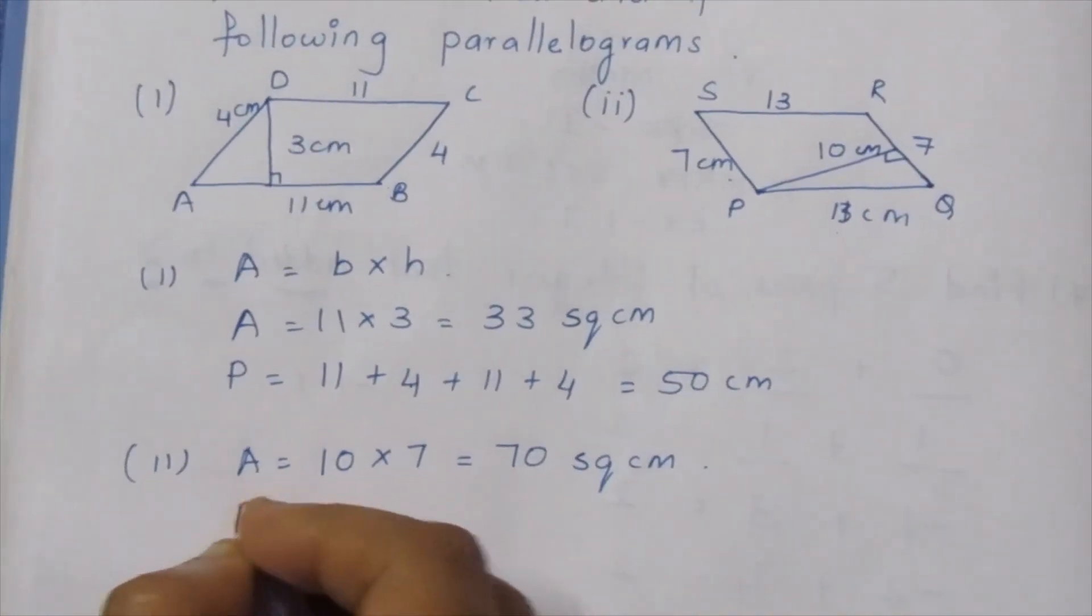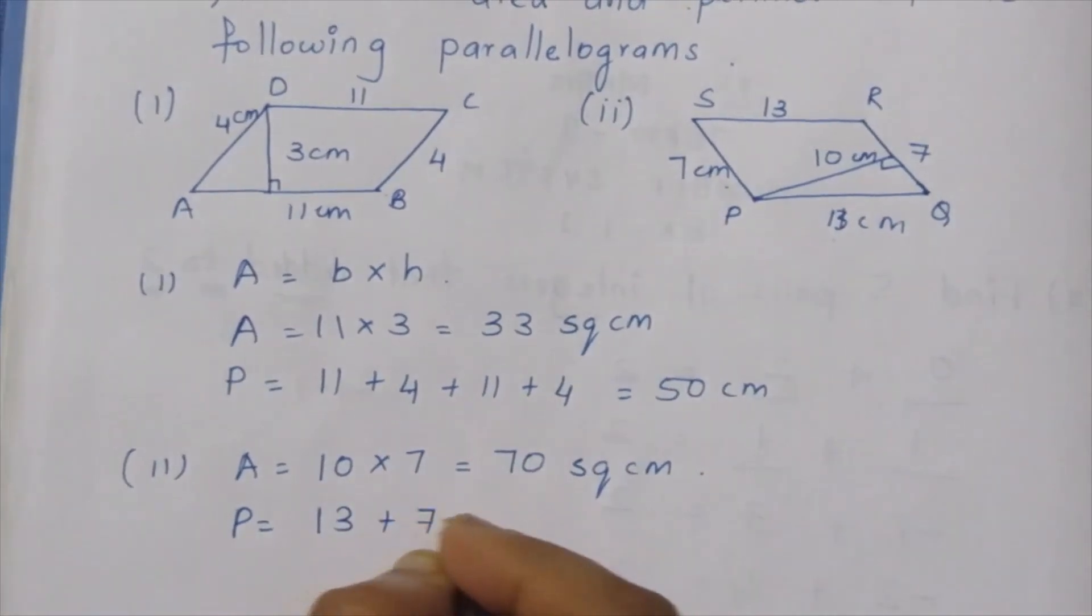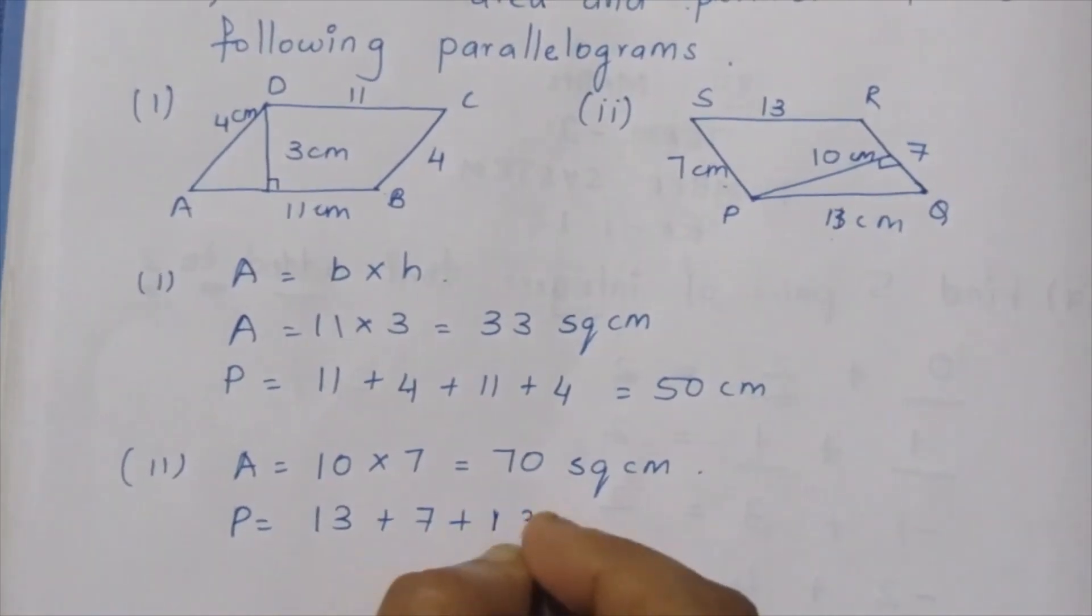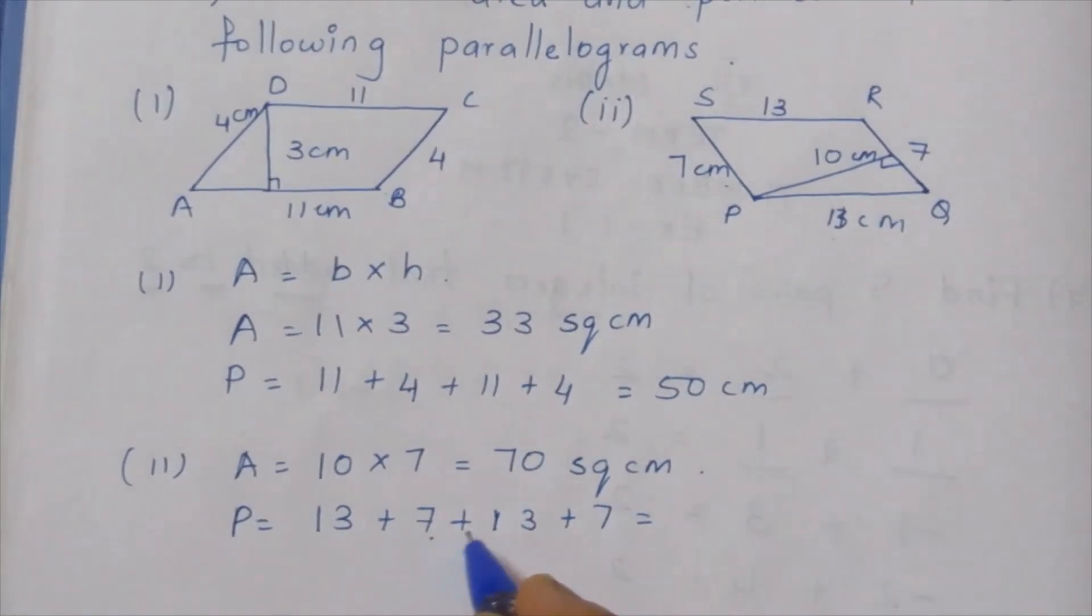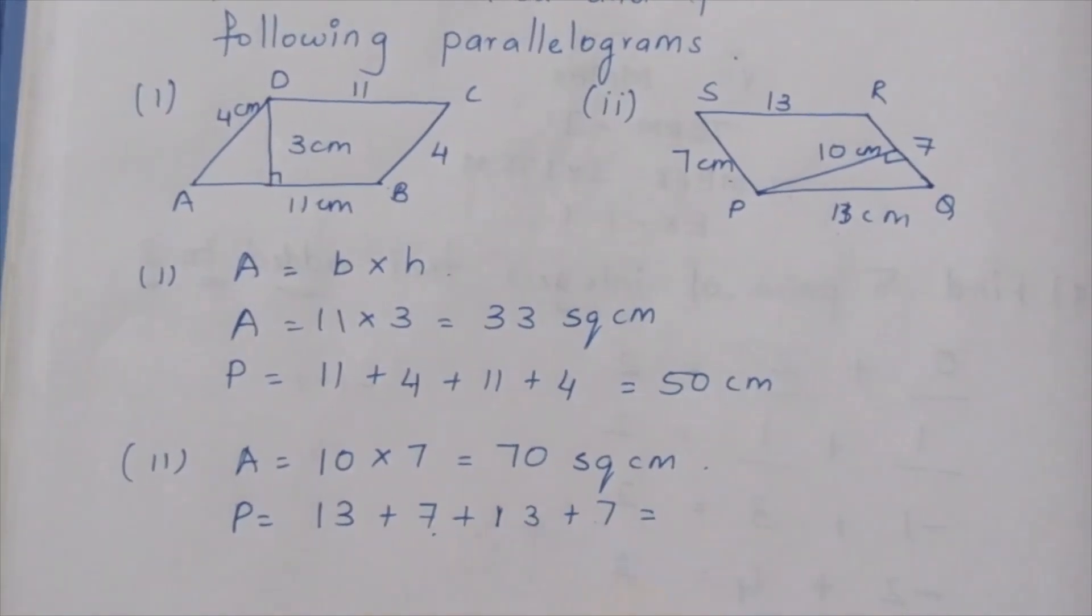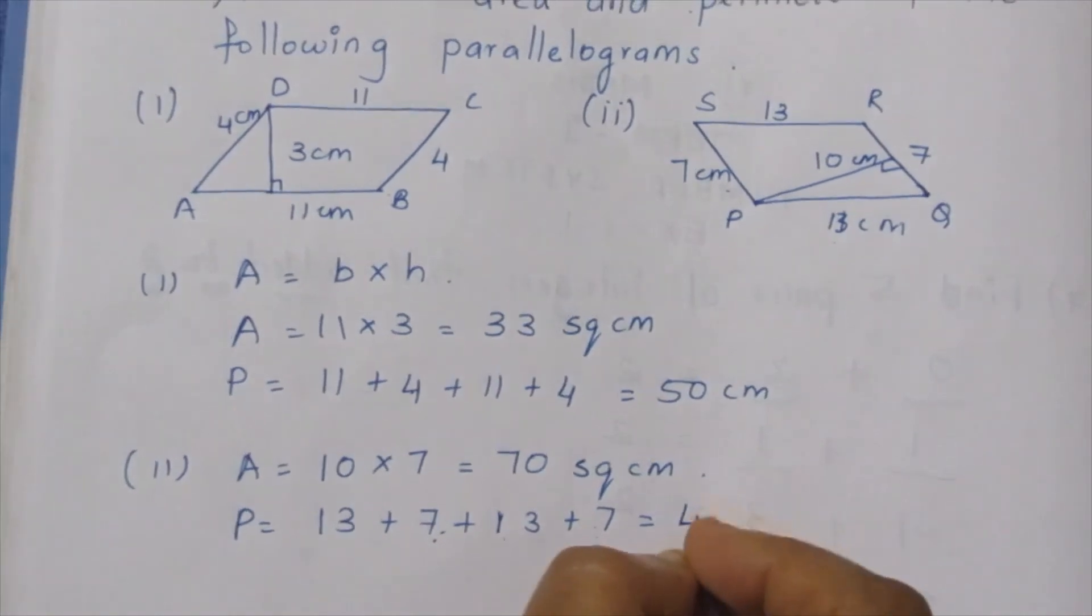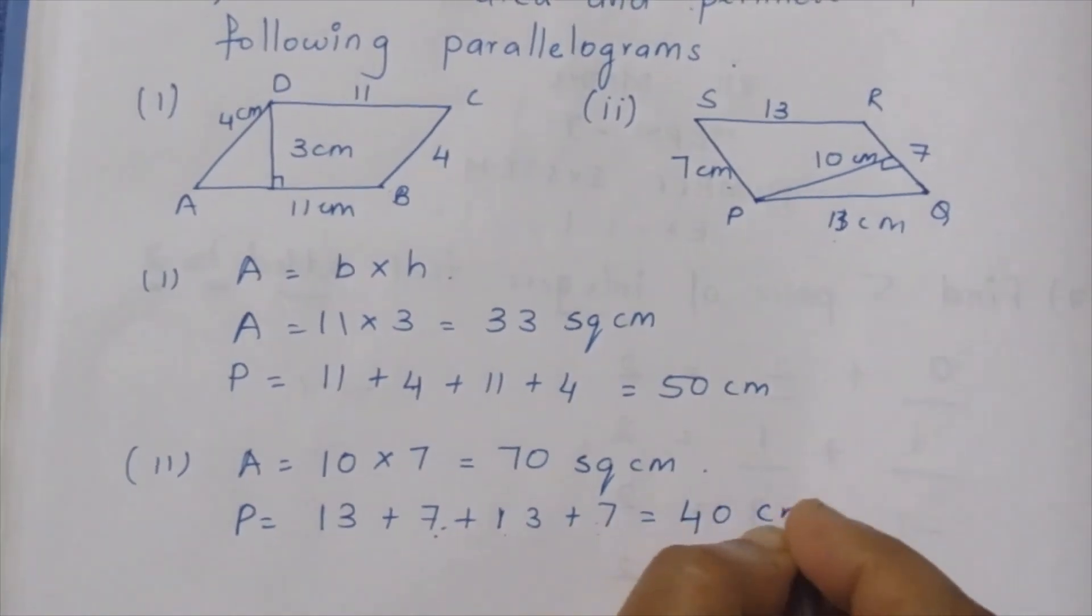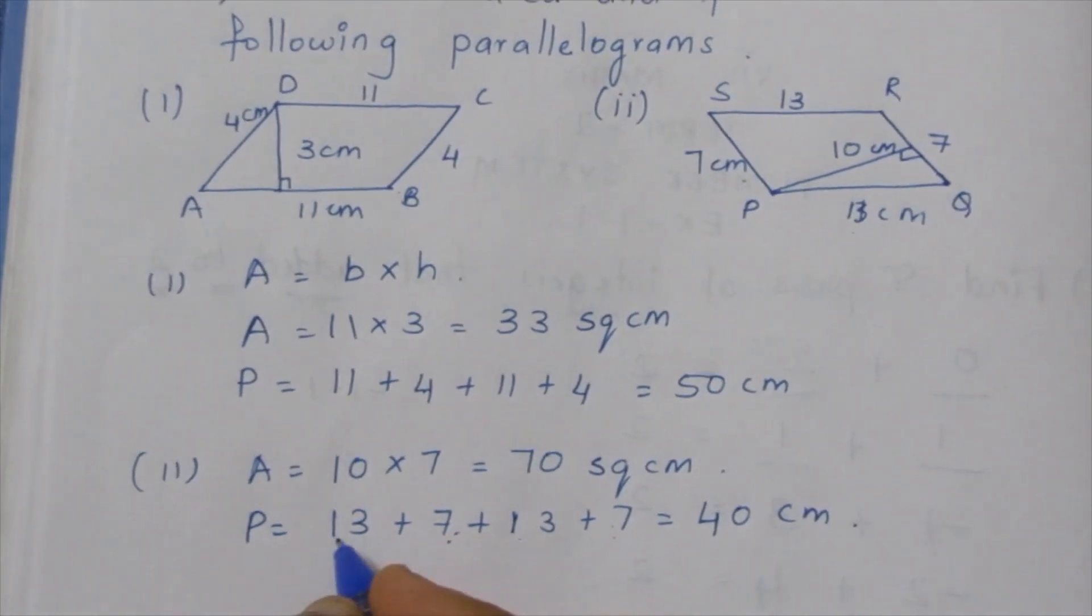Now perimeter: 4 boundary measurements, 13 plus 7 plus 13 plus 7. 20 is 40, that 20 plus 40, so 20 is 40. Perimeter is 20, 20, 20, 20, 40. So perimeter 40.